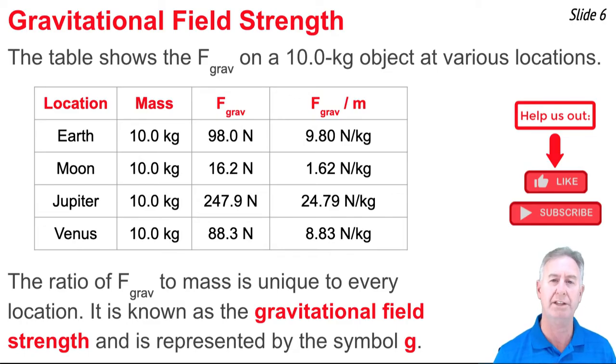Different planets have different gravitational environments. Here in this table we see the mass of a 50 kilogram person and their weight at four different locations: on the Earth, on the Moon, on Venus, and on Jupiter. And what we notice in the last column is the ratio is calculated for the F_grav to mass ratio.